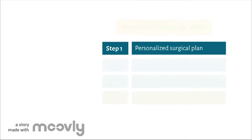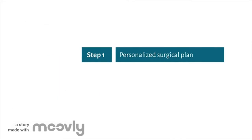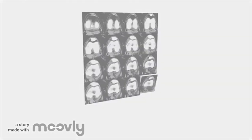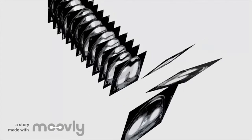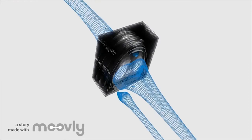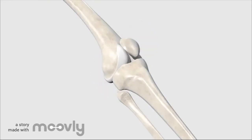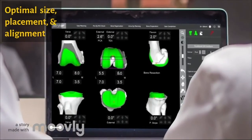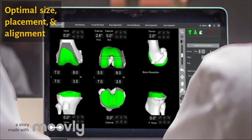In the first step, the surgeon creates a personalized surgical plan. CT data is collected to create a 3D model of the patient's bone anatomy. The Mako total knee application allows the surgeon to position the metal implants on the patient's virtual anatomy before the procedure. This specific preoperative plan allows for more optimal size, placement, and alignment of the implant.